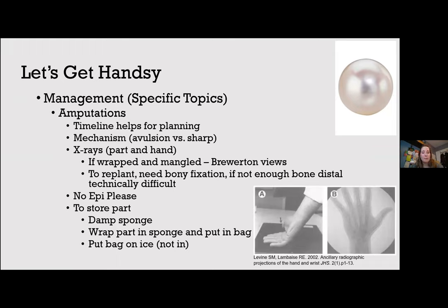For fingertip injuries, Lemon et al. in 2008 laid out an algorithmic approach. Goals of treatment are: providing durable coverage, preserving sensation and length, minimizing discomfort, and expediting return to work. Soft tissue defects less than 1.5 cm² at the pulp — even with exposed bone — can be treated with dressings and heal by secondary intention. Once outside the pulp or with significant tissue loss, plastics needs to be involved regarding revision amputation, reattachment, or local advancement flaps.